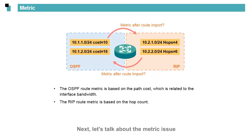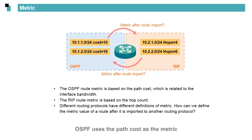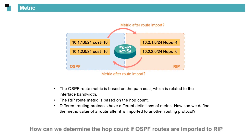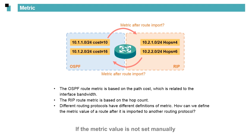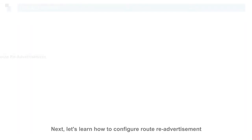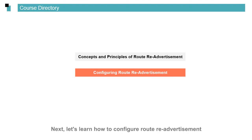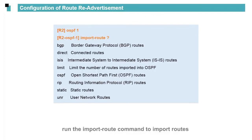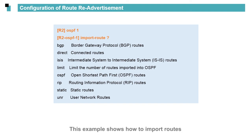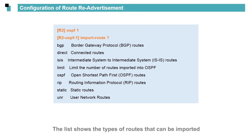Next, let's talk about the metric issue. OSPF uses the path cost as the metric, whereas RIP uses the hop count. When OSPF routes are imported to RIP, the metric can be set manually as required. If the metric value is not set manually during route re-advertisement configuration, the device uses the default value. To configure route re-advertisement, run the import-route command in the view of a routing protocol to import routes from another routing protocol. This example shows how to import routes into OSPF process 1, and lists the types of routes that can be imported.